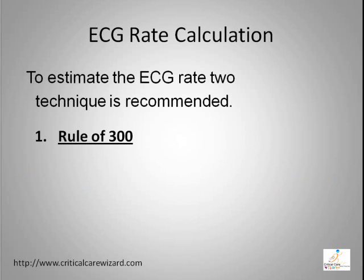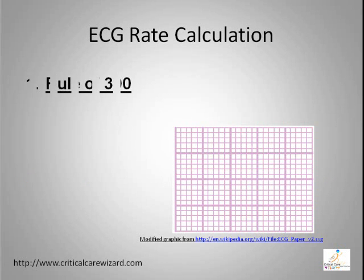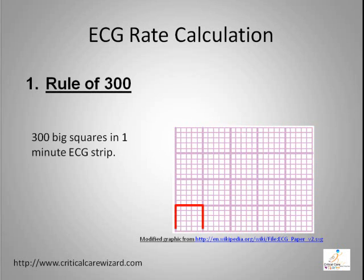Two simple techniques to estimate the ECG rate are recommended: the rule of 300 for fast heart rate, and the six-second rule for a slow heart rate. The basic assumption of the rule of 300 technique is to calculate heart rate in a one-minute ECG strip. There are 300 big squares or 1500 small squares in one minute of ECG strip.